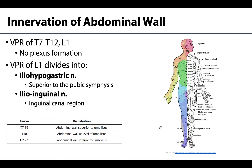Moving on to the neurovasculature of the abdominal wall — just big picture ideas. One of the most important points is that the nerves innervating the abdominal wall do not participate in plexus formation. The dermatome map in this region is very similar to the peripheral cutaneous map because the ventral primary rami of spinal nerves T7 through T12 and L1 head directly to their targets without splitting and forming nerves with fibers from other levels. One spinal cord level innervates the same region throughout — quite unique compared to the rest of the body.